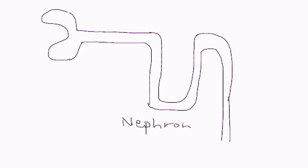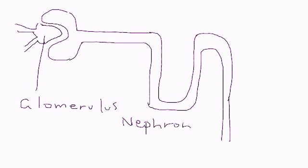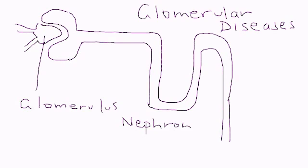And here is the glomerulus. Now when you have diseases of the glomerulus — glomerular diseases — what's happening is you have a problem at this level. And what that does is: normally when blood comes, it's filtered, and eventually the waste products are excreted in the urine. Now large molecules are not supposed to come out into the urine. Large molecules don't pass through the glomerulus, so if they do, that means there's some sort of problem, some sort of pathology in the glomerulus.